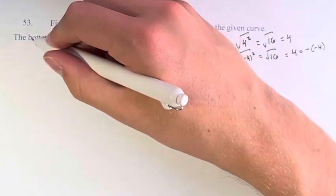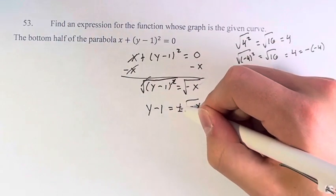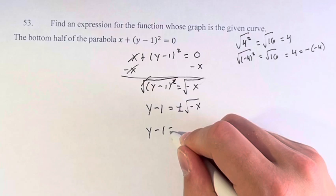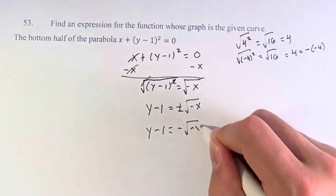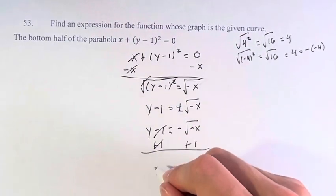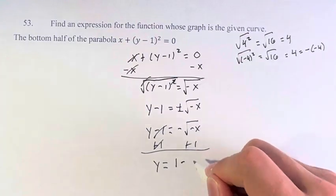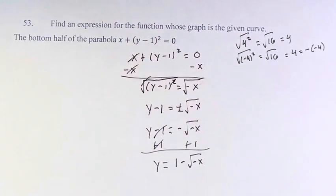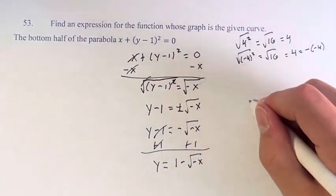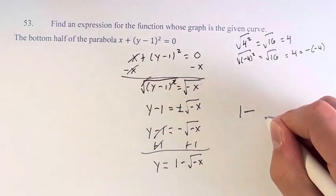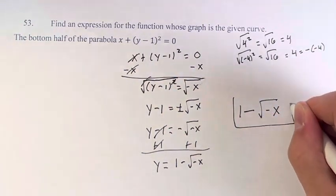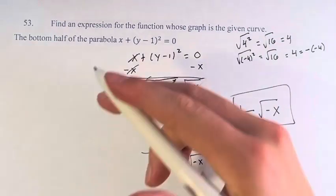However, since we're only looking at the bottom half of the parabola, we take only the negative. So y minus 1 is equal to negative the square root of negative x. Solving for y gives us y is equal to 1 minus the square root of negative x. This is the expression for the bottom half, and only the bottom half, of this parabola.